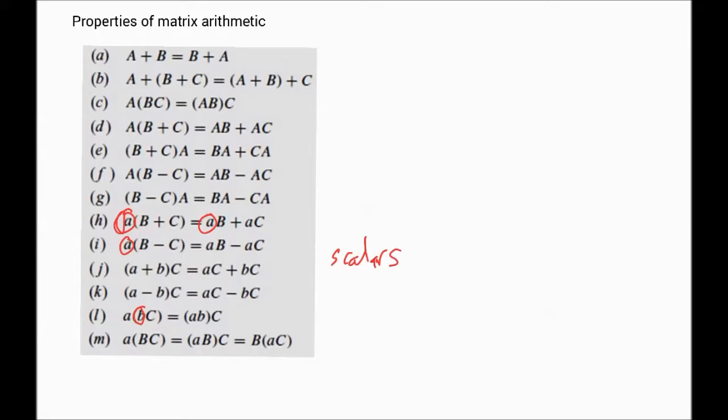And A, B, and C are matrices. So A, B, and C are matrices, right? So let's go and define zero matrices.